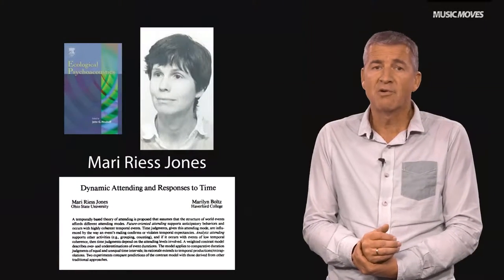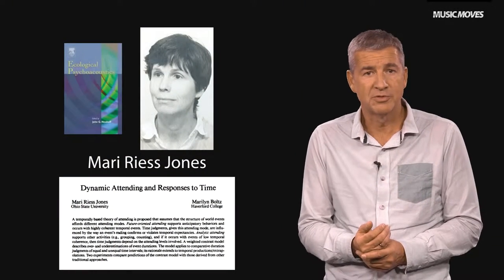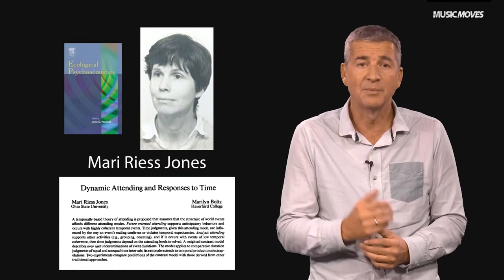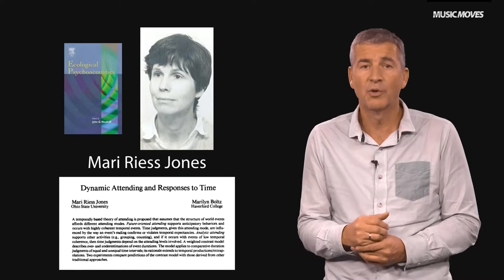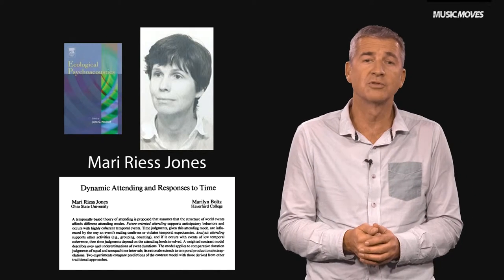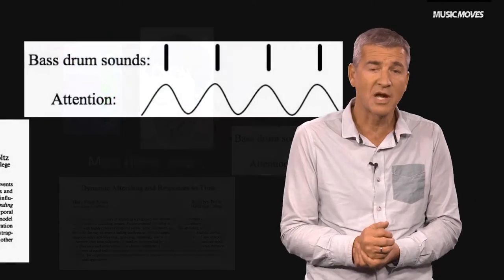But what happens on the inside is still an active research topic. Mary Reese Jones believes that our attention towards rhythm in music oscillates, so that we have attentional peaks at important points in the music — points where specific sounds or accentuations mark starting points of a rhythmic phase. These are called attractors. The bass drum sounds in the dance music track work as such an attractor.